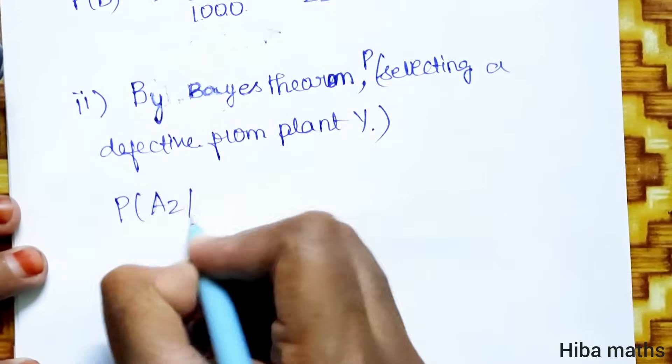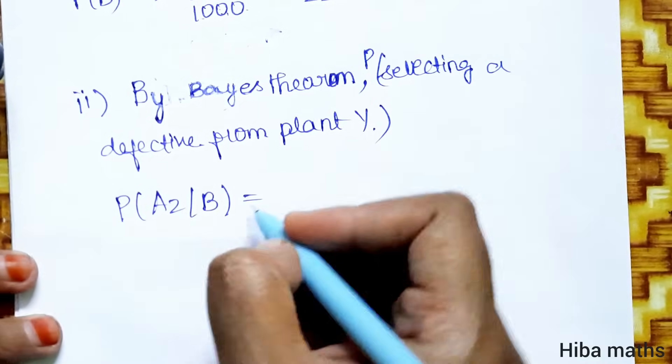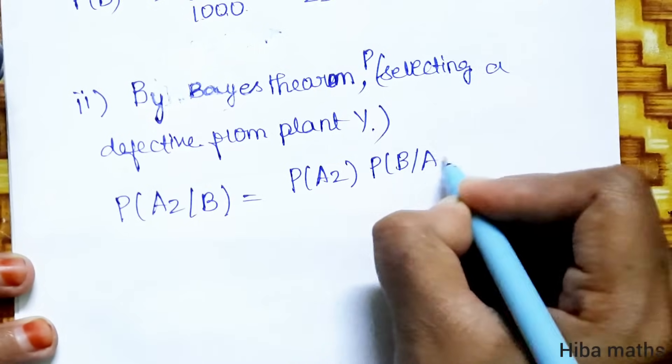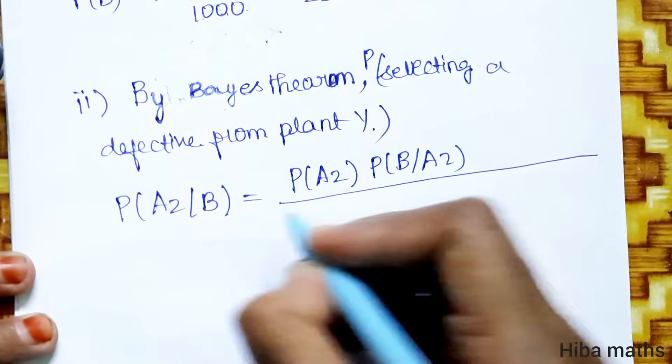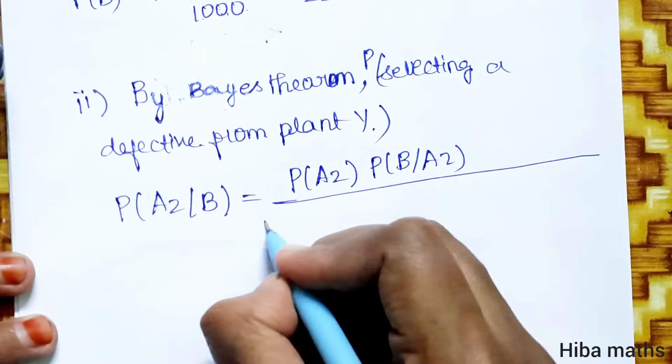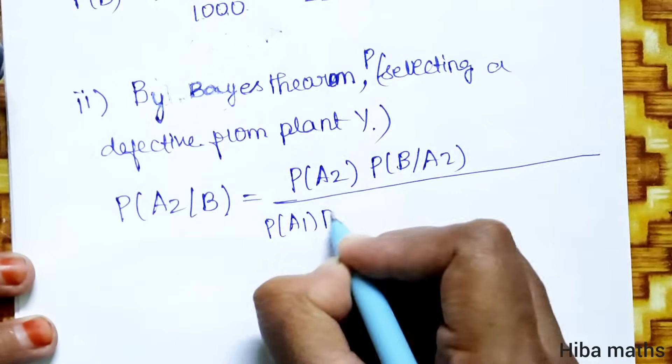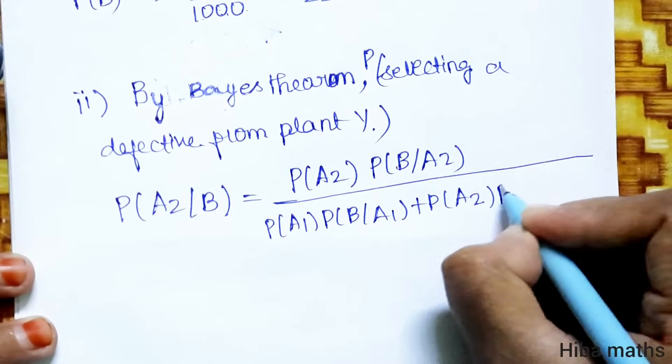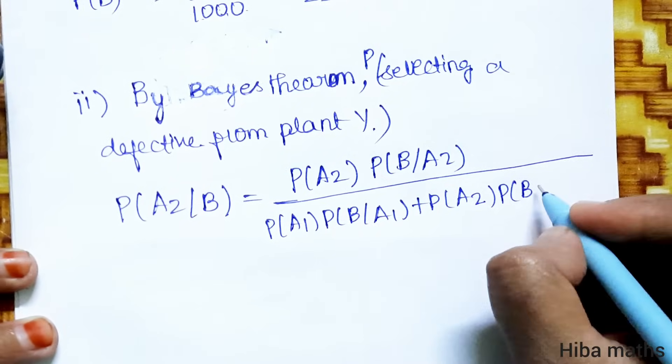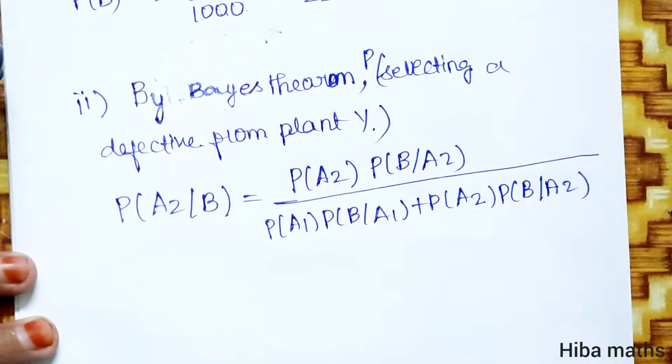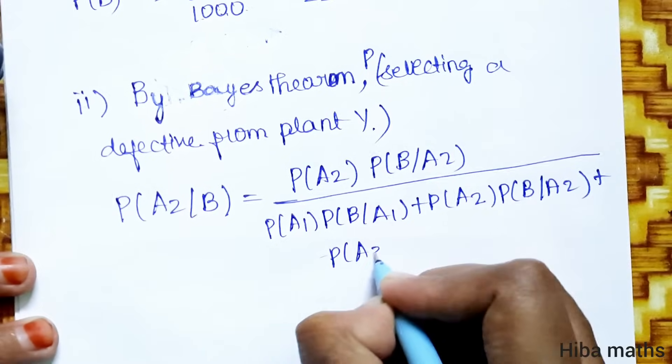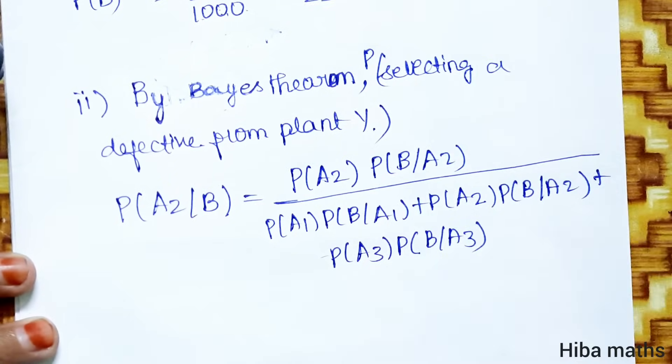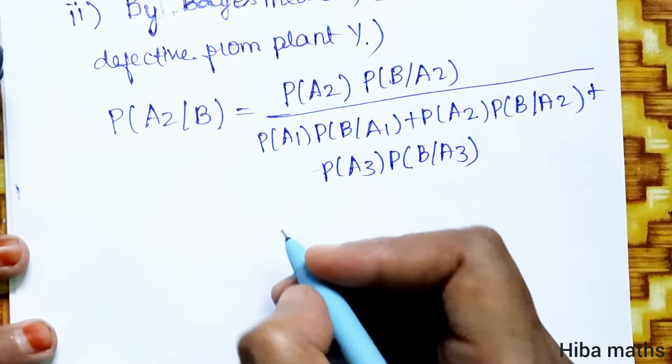P of A2 by B, that is equal to P of A2 into P of B by A2 divided by full term: P of A1 into P of B by A1 plus P of A2 into B by A2 plus P of A3 into P of B by A3. This already we will have to do it. Now we will have to substitute it.